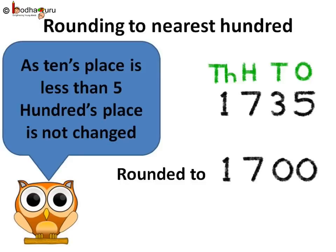So the 100th place is not increased by 1 count. It will remain at 7. And all the places in its right, that is 10's and 1's place, would be filled with 0. So we have rounded down the number to nearest 100. So 1735 is rounded to 1700 if we are rounding to 100th place.